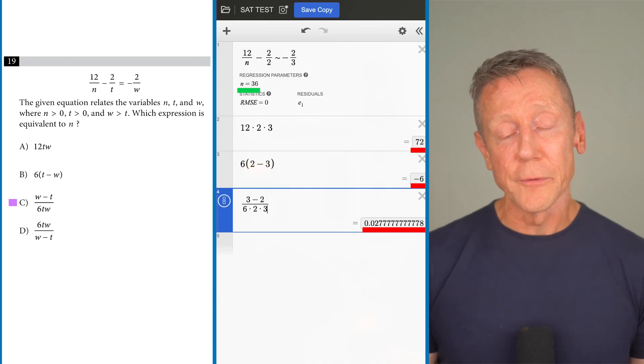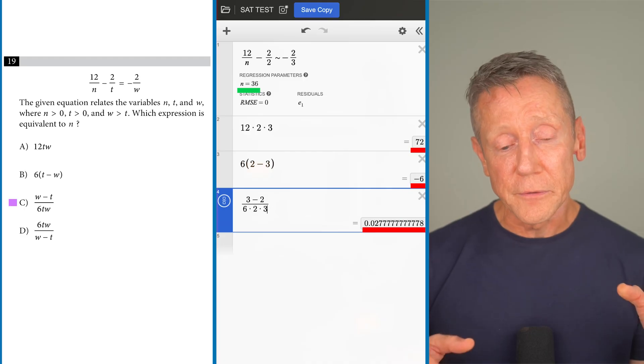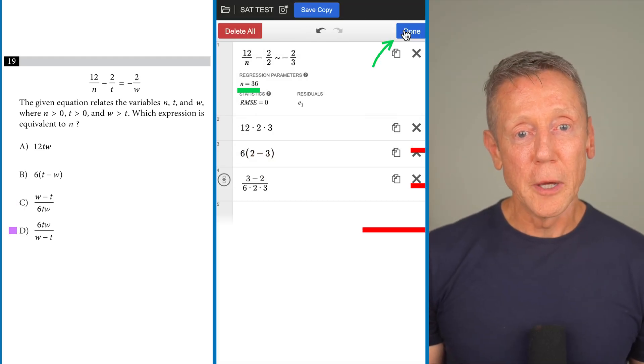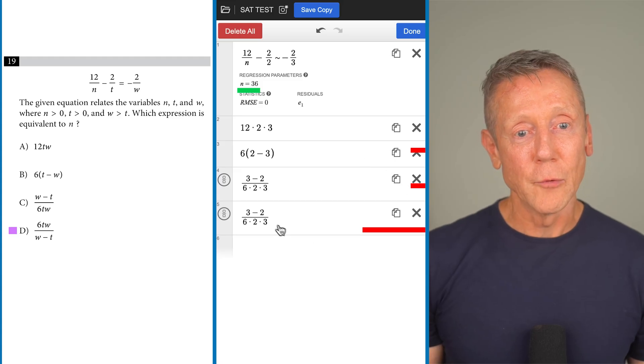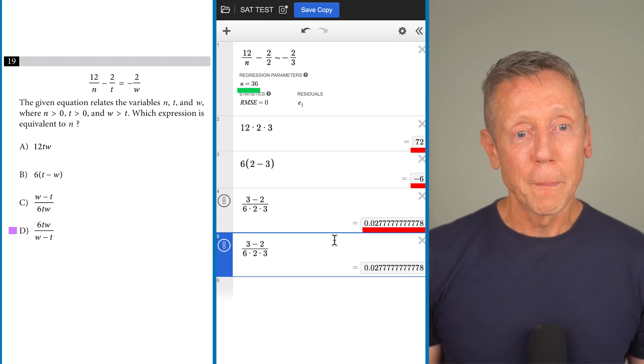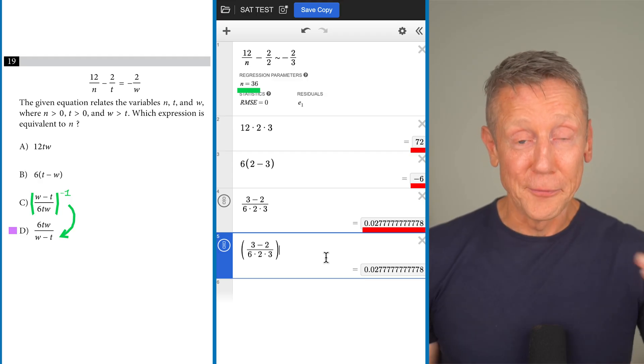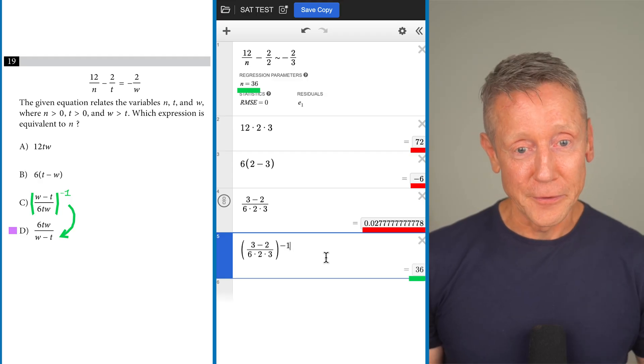Since the first three didn't work the fourth one is the right answer, but I'm going to go ahead and do the fourth one anyways just so you can see how easy it is to duplicate and edit. We start by hitting the duplicate button, we duplicate the third one, we come down, we put parens around this, and I'm going to take it to the minus one power which basically flips a fraction. And there's our answer 36.